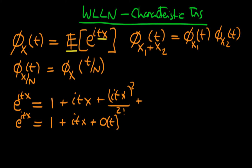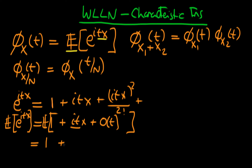When we take the expectation of both sides, the expectation operator is linear, so it operates on each individual term in the Maclaurin series. The expectation of 1 is just 1. For the second term, i and t are constants, so we get itμ, since the expectation of x is its mean μ. Then we get other terms of order t squared. That is the Maclaurin series expansion of the characteristic function.